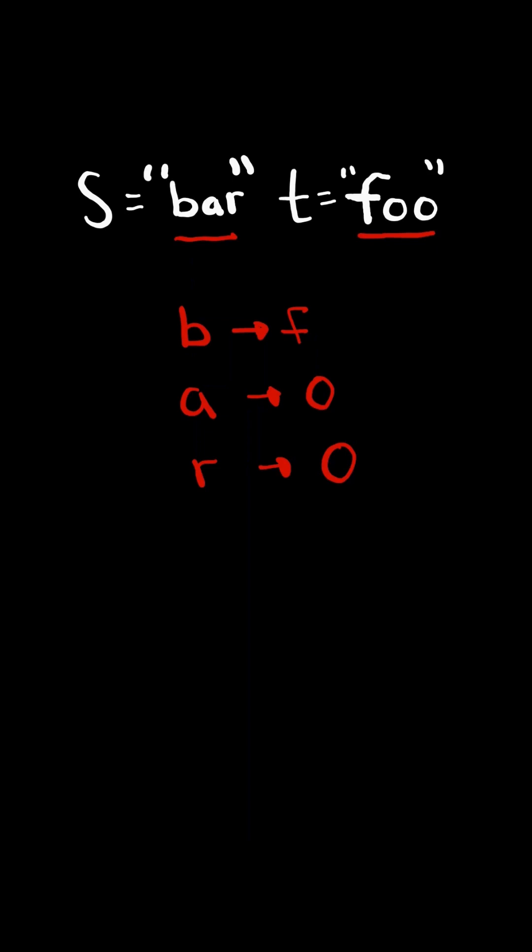Now consider the mappings from S to T. We would have incorrectly mapped A and R to the same character O.